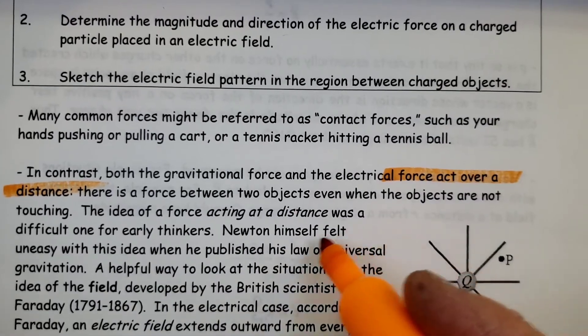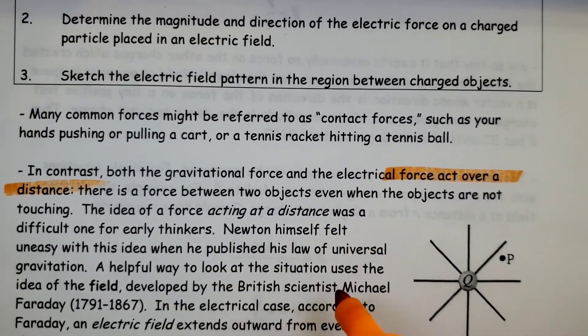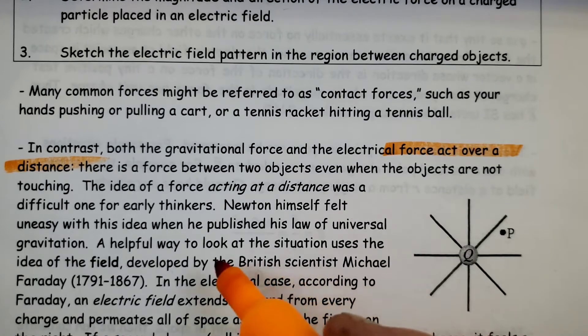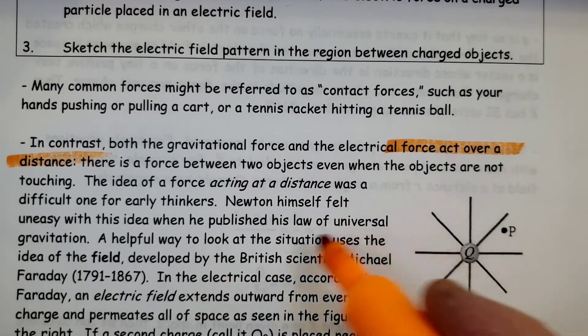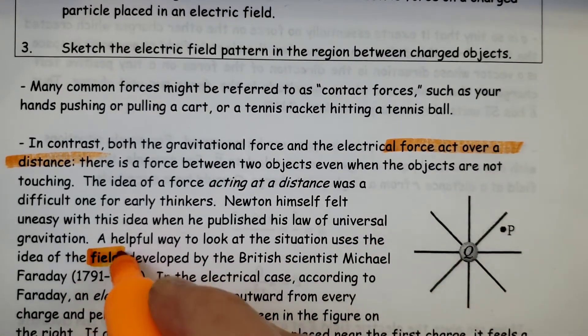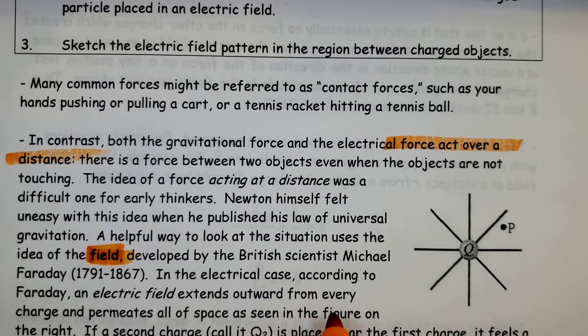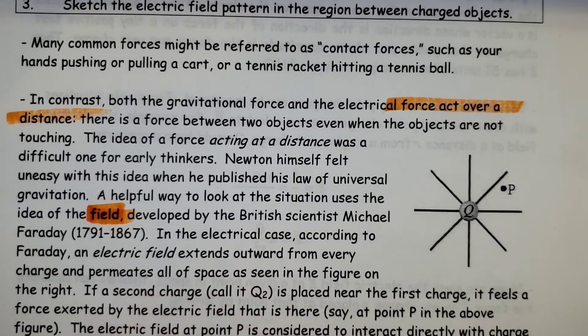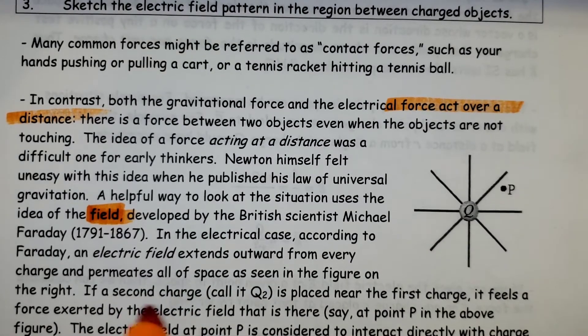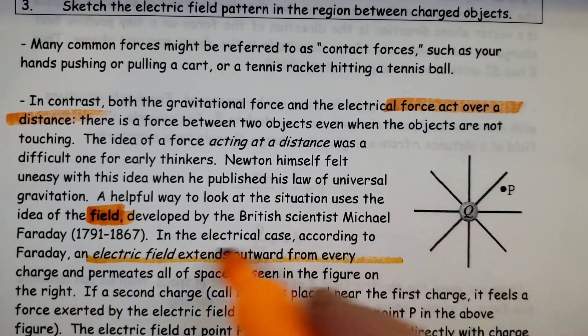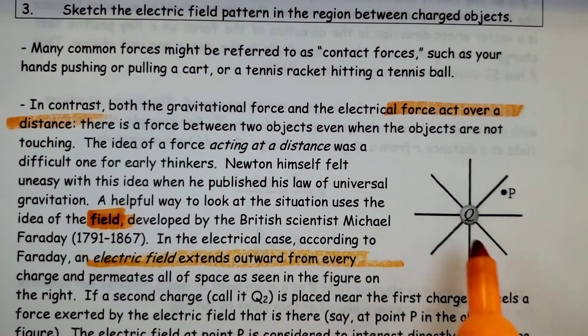Newton himself felt uneasy with the idea when he published his law of universal gravitation. A helpful way to look at the situation uses the idea of a field developed by British scientist Michael Faraday. In the electrical case, according to Faraday, an electric field extends outward from a charge and extends into all space.